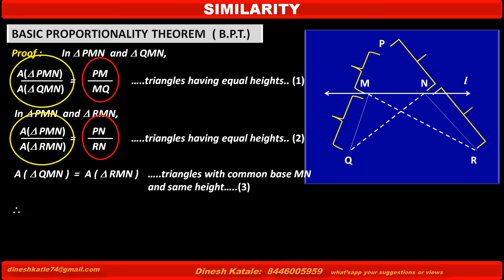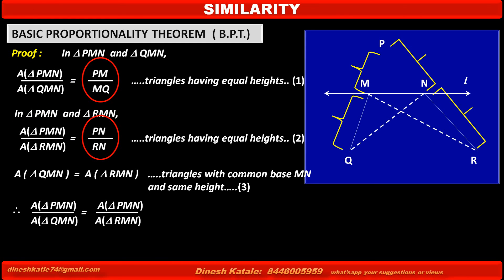Therefore, area of triangle PMN upon area of triangle QMN is equal to area of triangle PMN upon area of triangle RMN. These ratios are equal because they have a common numerator — area of triangle PMN — and their denominators are equal according to Statement 3. Therefore, as the left-hand sides of equations 1 and 2 are equal, we can write that their right-hand sides are also equal.